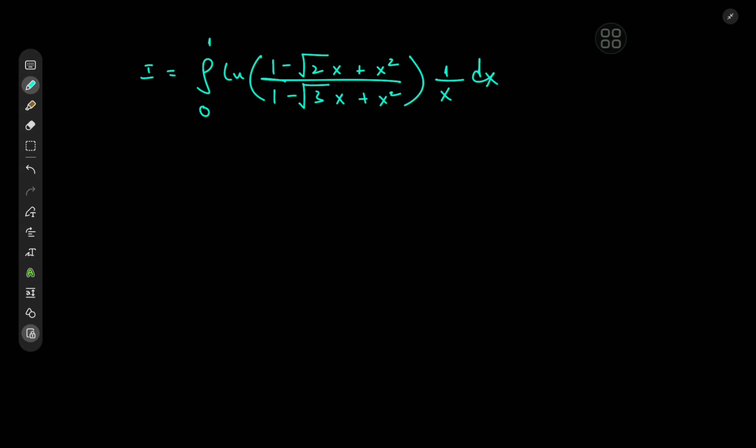Greetings and welcome back. Today we have a very interesting integral: the integral from 0 to 1 of log(1 minus root 2 times x plus x squared) divided by (1 minus root 3 times x plus x squared), times 1 over x, dx. The structure and coefficients for the x terms in the numerator and denominator were chosen for a very specific reason.